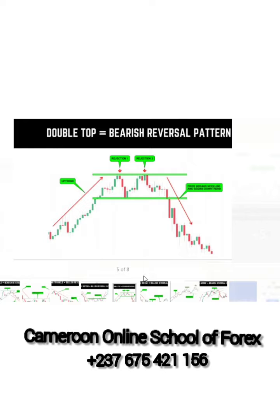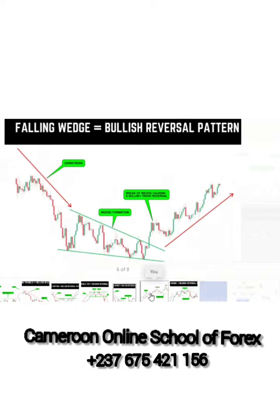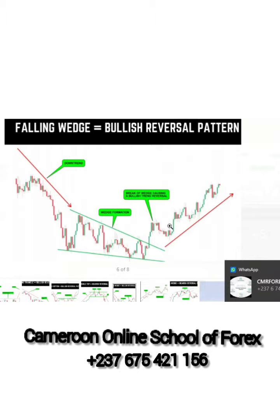Now the falling wedge, which describes the downward movement of the market but shows us a bullish reversal pattern. The falling wedge forms the first support, goes back to resistance, then forms a second support. We link these two support points and draw the line going down. Then a break of the wedge causes a bullish trend reversal.